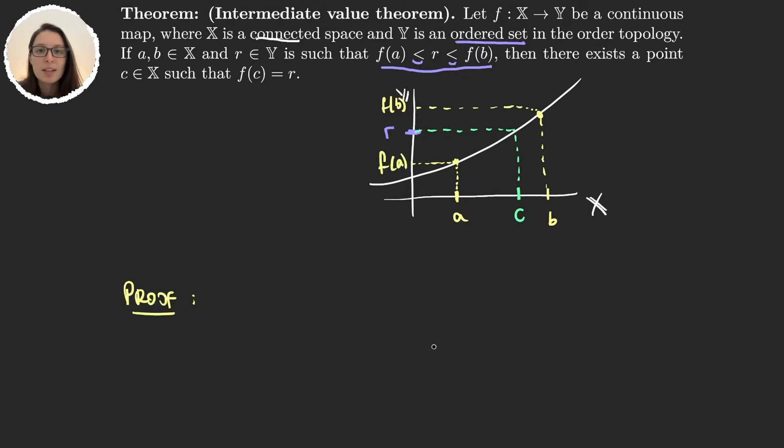The key idea will be to use both our hypothesis that X is a connected space and that Y is an ordered set. Because given that Y is an ordered set, then I can just consider the intervals minus infinity r open in r.